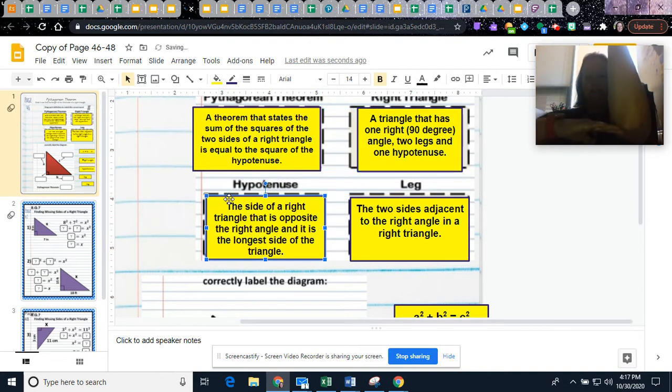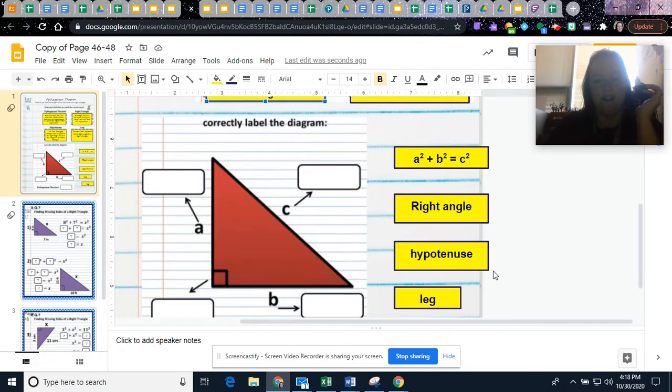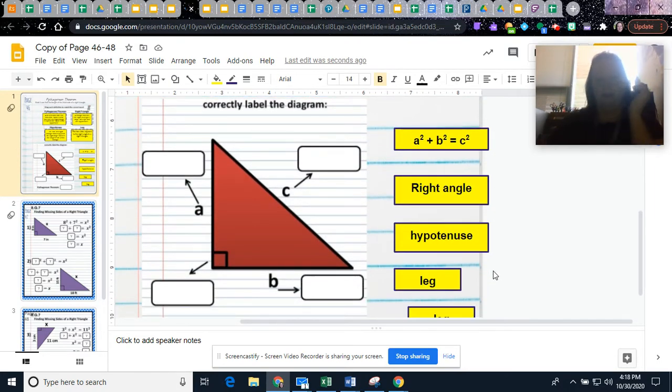So again, if you have your right angle here, then the hypotenuse is this part here that's opposite of the right angle. So let's label the diagram down here, because I think that'll help.